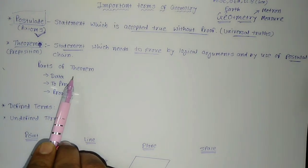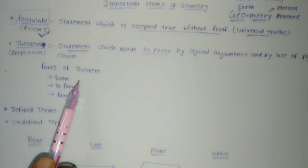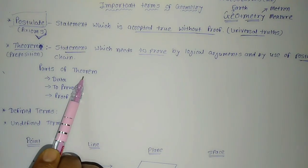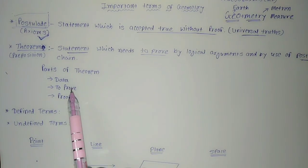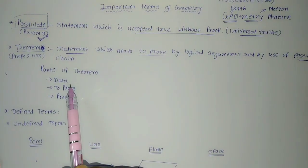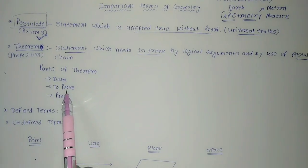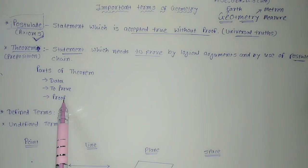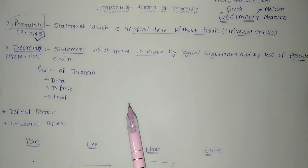A theorem has mainly three parts: data, to prove, and proof. For beginner students in standard 7 to 9, this may be new. Data means what is given in the statement. 'To prove' is what we want to establish as proven. And proof is the logical argument itself. Let us look at an example using one of the theorems.